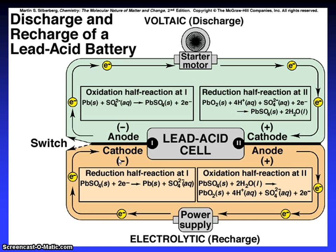Discharge and recharge of a lead-acid battery. Voltaic discharge: starter motor. Oxidation half-reaction at Pb + SO4 2- gives PbSO4 solid + 2 electrons. Reduction half-reaction at PbO2 + 4H+ + SO4 2- + 2 electrons gives PbSO4 + 2H2O. Switch: anode cathode to cathode anode. Reduction half-reaction and oxidation half-reaction. This is the power supply. Starter motor.